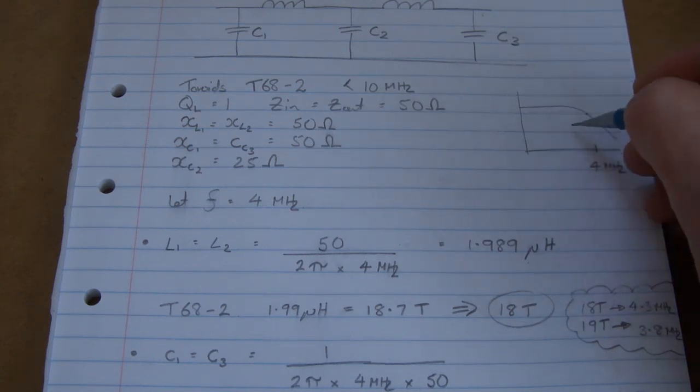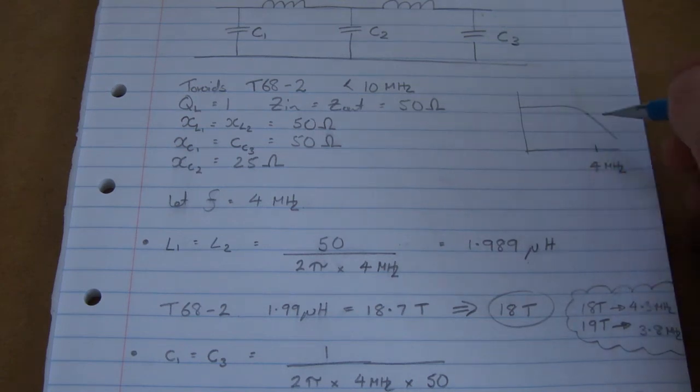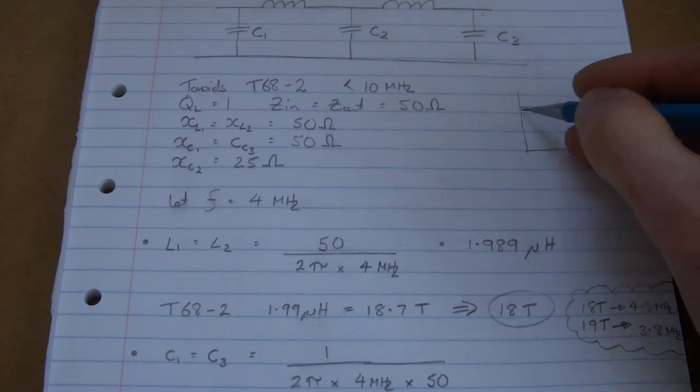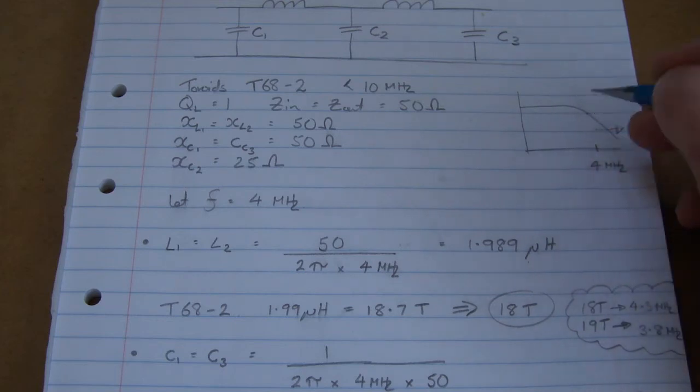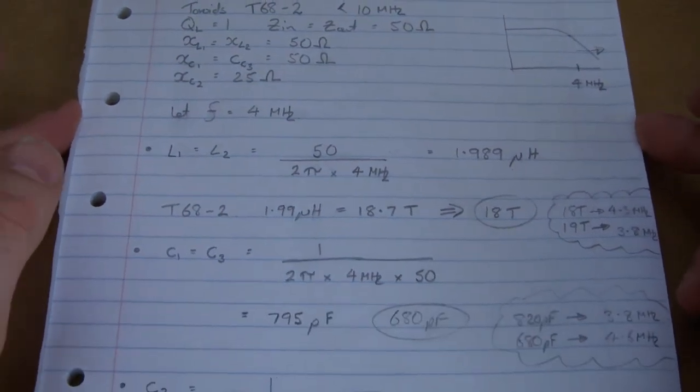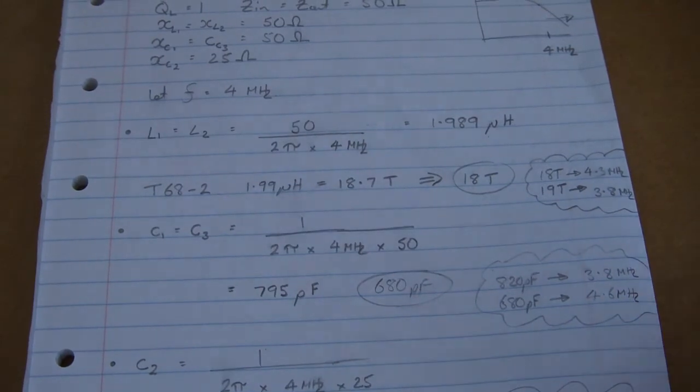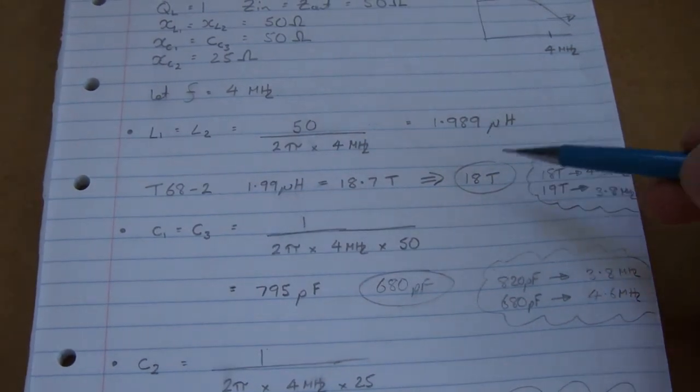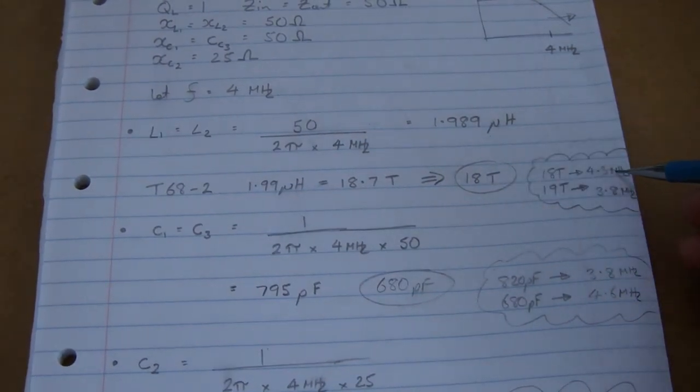And what I don't want to do is have this 3 dB point here sneaking this way too much, otherwise I'm going to start to eat into my 80 meter band. So I prefer to push that 3 dB point further to the right, just to make sure that I've got max pass band, or least attenuation more the point, across the 80 meter band. So that's why I've elected to select 18 turns, which would give me that 4.3 megs.